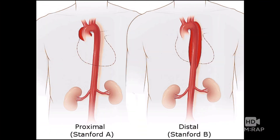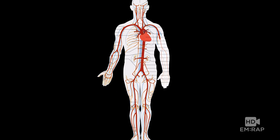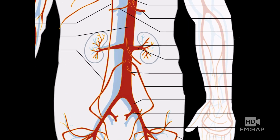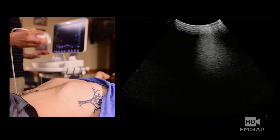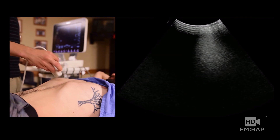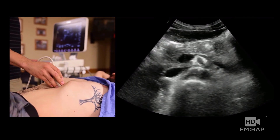There are two ways you can classify dissections: proximal or distal. We're going to talk about looking for a distal type B dissection first, because the abdominal aorta is probably the easiest part of the aorta to visualize. You're going to use your transducer, place the probe marker over towards the patient's right, and start right in the epigastric area.